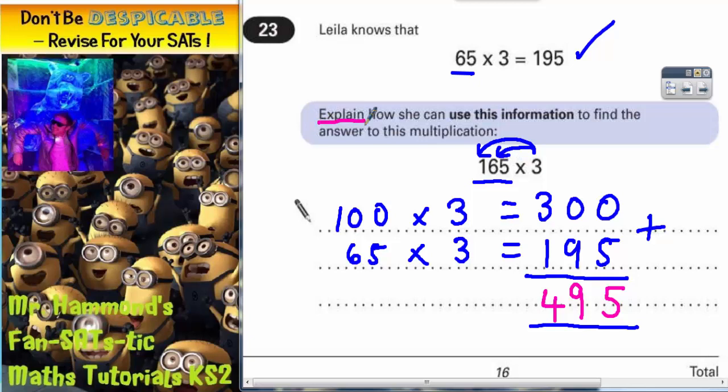It did say explain it. So for an explanation - I mean that's the working out - but all you'd have to write is: add on 3 times 100, which is 300, to 3 times 65, which is 195. And then the working out would show that the total answer is 495.